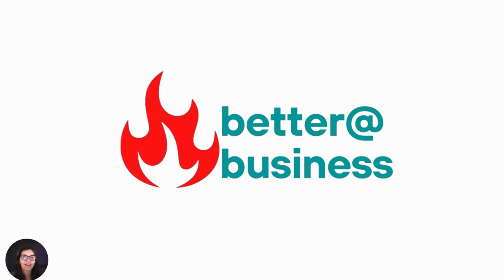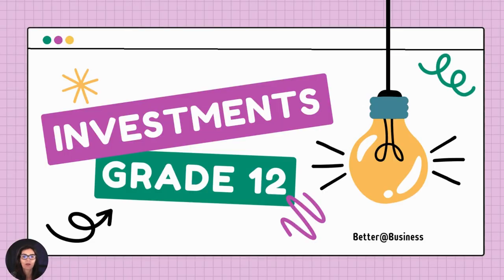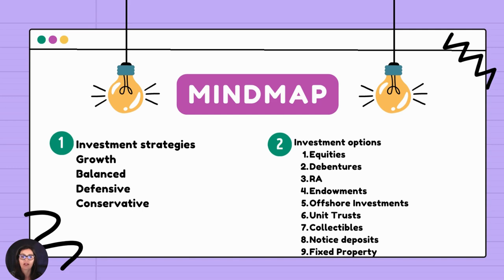Welcome back, grade 12s. We are with Better at Business. We looked at our strategies for investments, and we are now going to look at our investment options. We're going to do the first four investment options, and then there'll be a part three with the rest of the investment options that you could choose from.